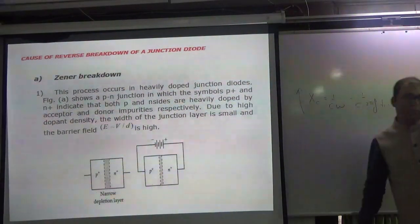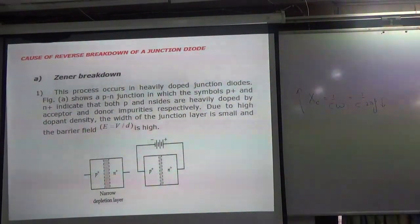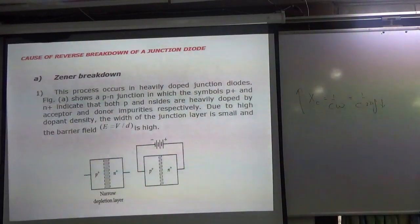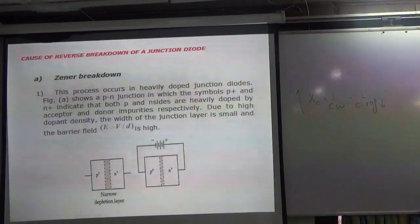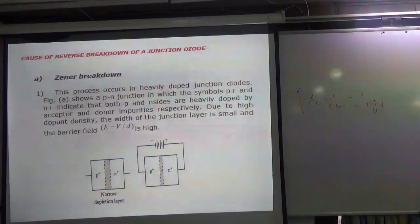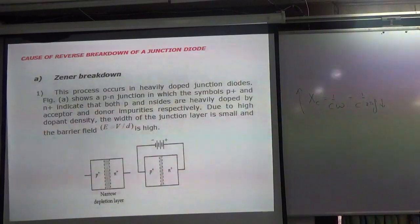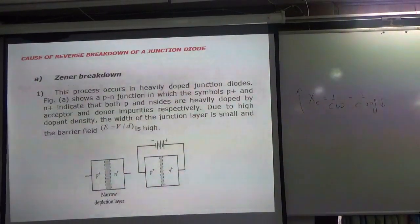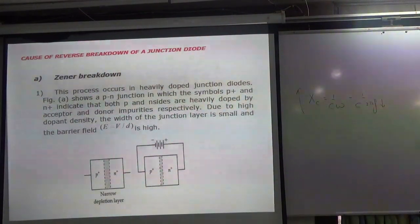Next is Zener breakdown. A diode — any diode — will be in forward biasing or it will be in reverse biasing.